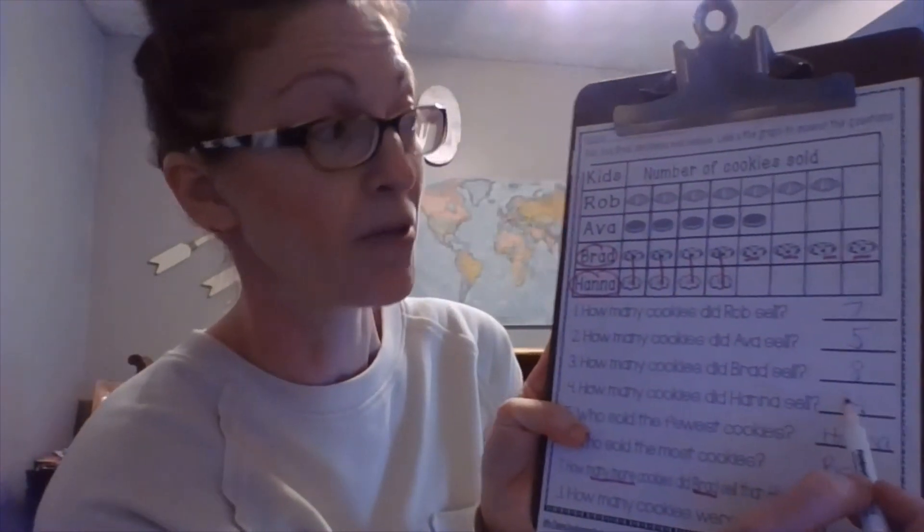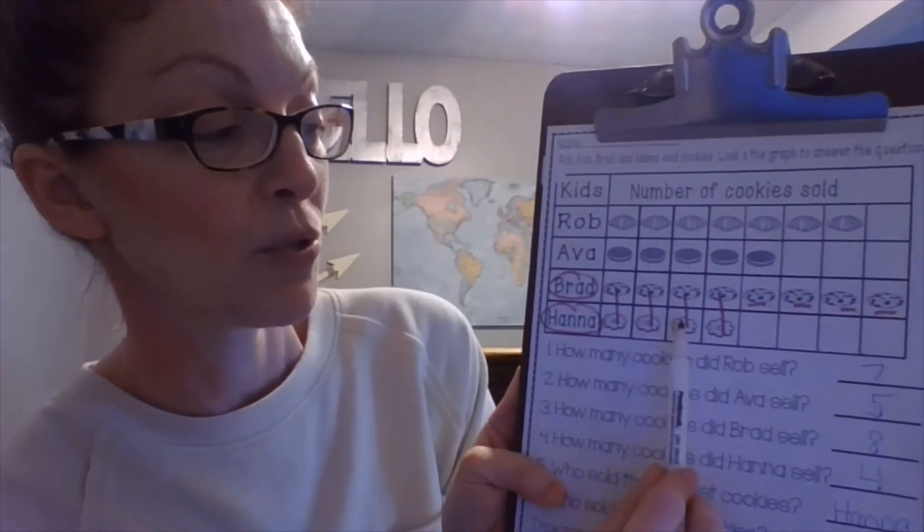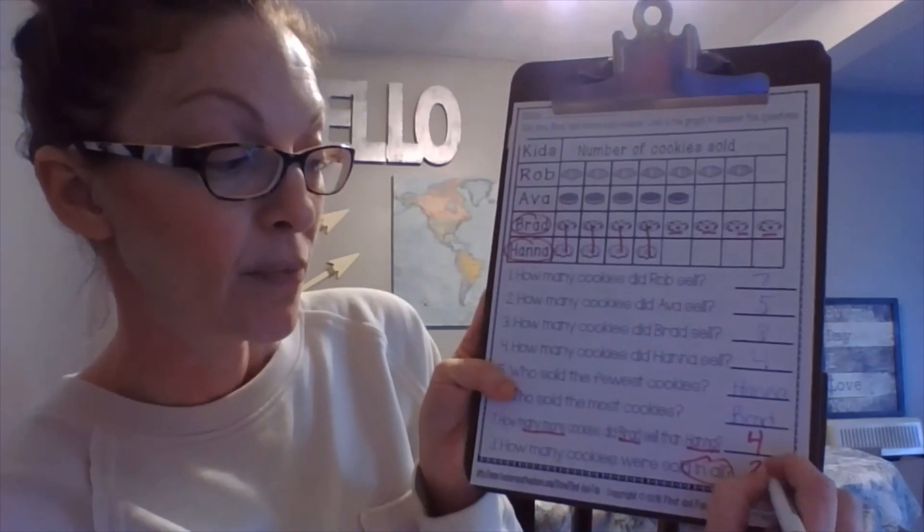Or if you don't want to be that tricky or you don't have extra paper, you can just count them up here. One, two, three, four, five, six, seven, eight, nine, ten, eleven, twelve, thirteen, fourteen, fifteen, sixteen, seventeen, eighteen, nineteen, twenty, twenty-one, twenty-two, twenty-three, twenty-four. How many cookies were sold in all? Twenty-four cookies.